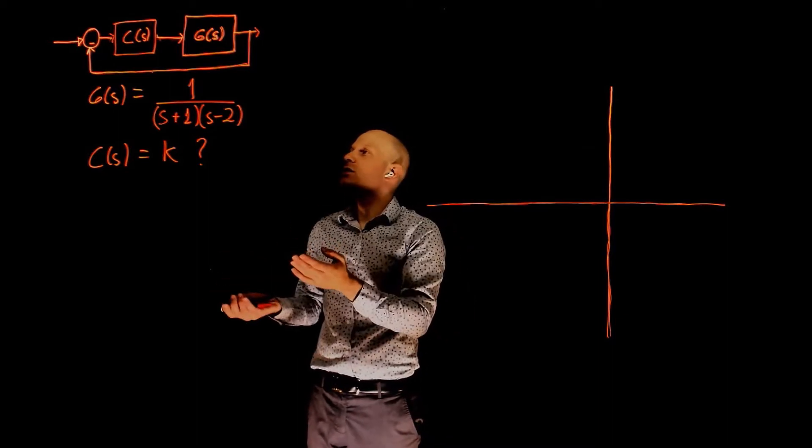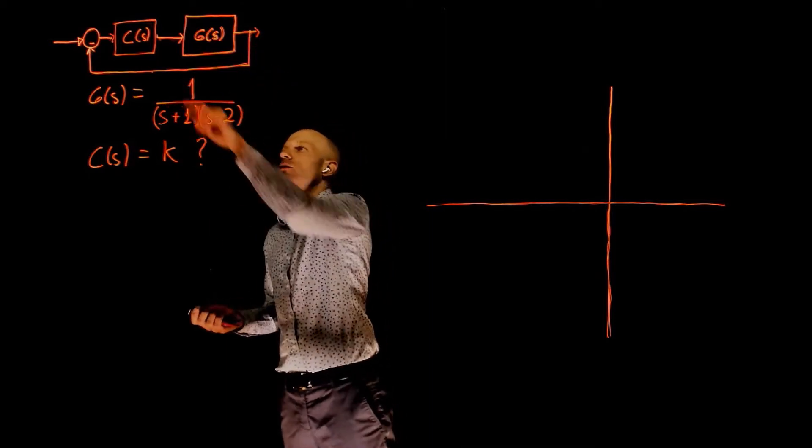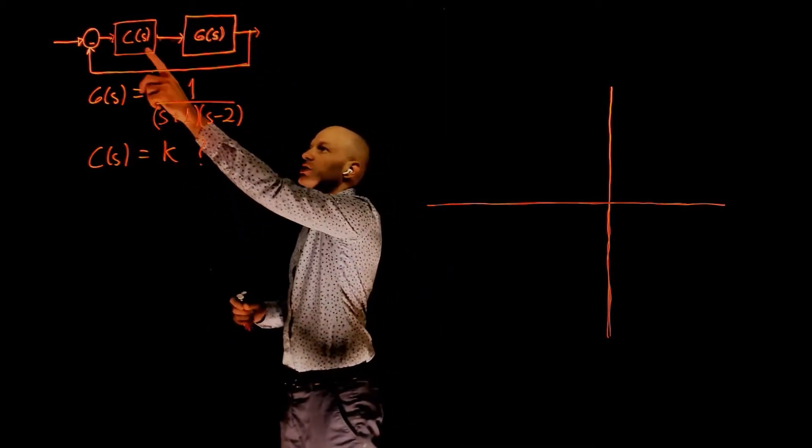We now want to stabilize this system, and to stabilize this system, we put G of S in a unit feedback loop with the controller C of S.